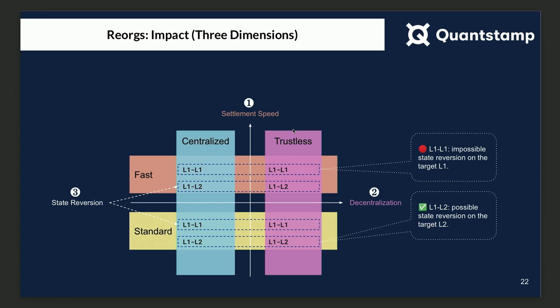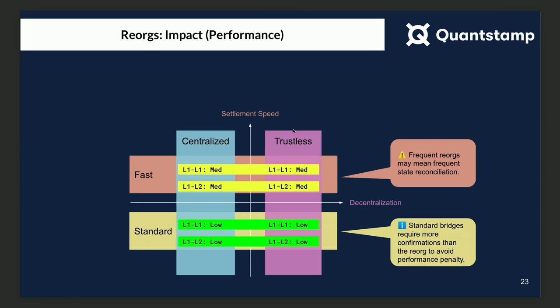When looking at reorgs, besides the two dimensions, we think we also need to look at a third dimension, which reflects state reversion. If we go between two L1 chains and there is a reorg, you cannot revert the state of the other L1 chain. But if you go between L1 and L2, you could revert the state of L2, because L2 is secured by the given L1. For performance, fast bridges have medium impact — dictated by the frequency of reorgs — whereas standard bridges have low impact, as long as the number of confirmations is higher than the frequency of reorgs.